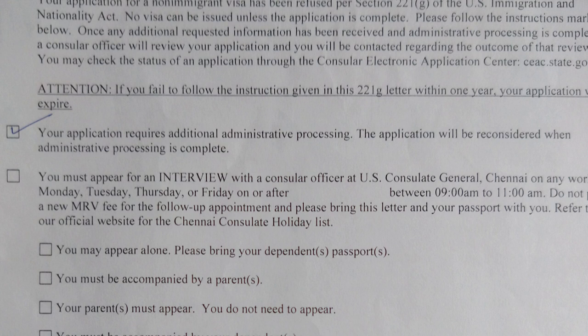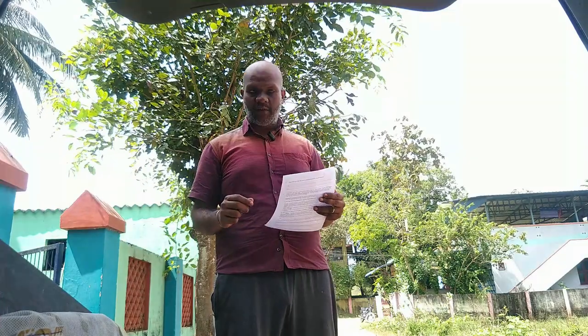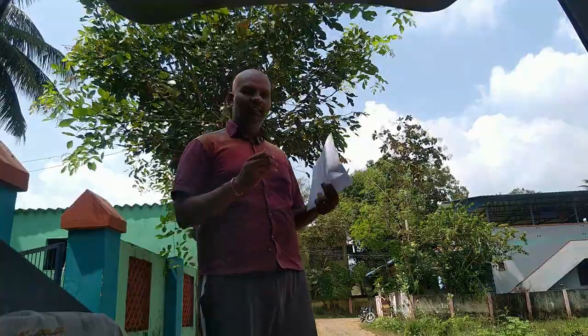The first point says: 'Your application requires additional administrative processing; the application will be reconsidered when administrative processing is complete.' If this is ticked, nothing can be done from your end — they need more time. The application will be resent to the US side and a third party will do a review. This may take up to 60 days. You can go to the USCIS website and check the status using your DS-160 confirmation number to get the current status and when it was last updated.